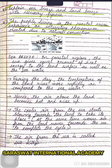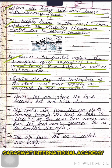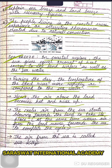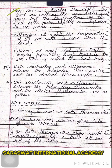Explain sea breeze and land breeze with necessary figures. The people living in coastal areas experience an interesting phenomenon created due to natural convection. Sea breeze: in coastal regions, the sun gives equal amount of heat energy to the land surface as well as the seawater. During the day, the temperature of the land rises more rapidly compared to the seawater. Hence, the air above the land becomes hot and rises up. The cooler air from the sea starts blowing towards the land to take its place. At the same time, the warm air from the land moves towards the sea to complete the cycle. The air from the sea is called sea breeze.